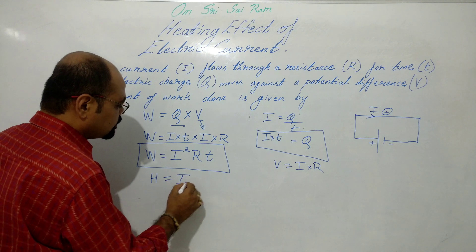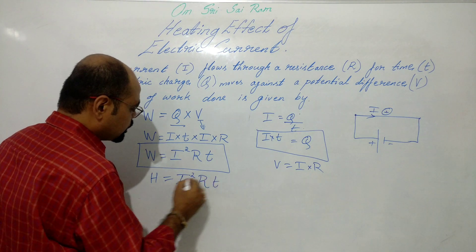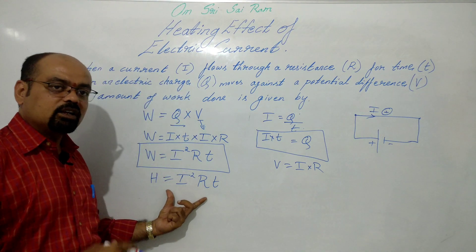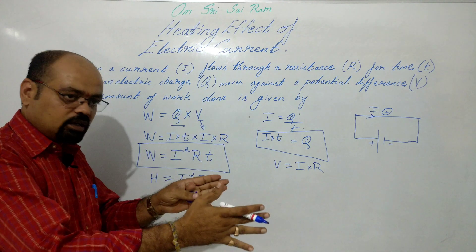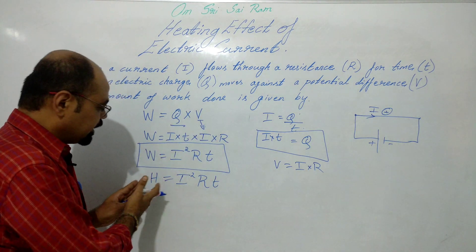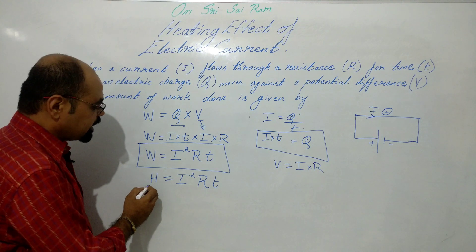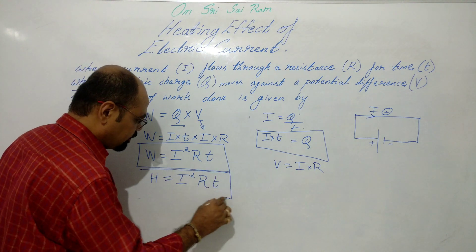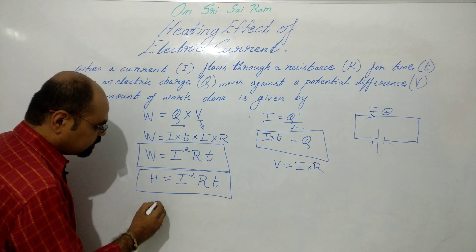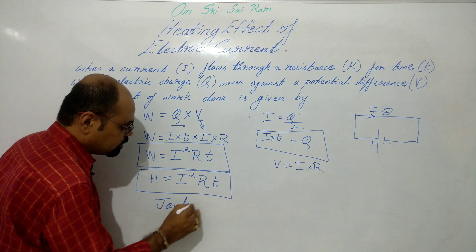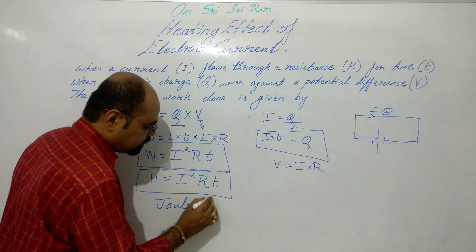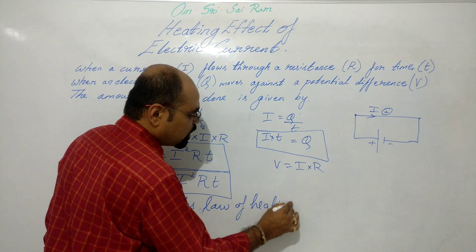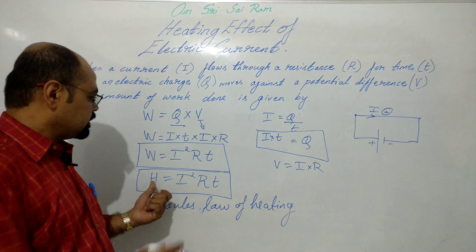The amount of heat energy released is equal to I²RT. In the heating effect of electric current, the complete work done is transformed into heat. So heat energy H = I²RT, and this formula is known as Joule's law of heating.